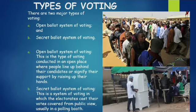Types of Voting. There are two major types of voting: open ballot system of voting and secret ballot system of voting. A. Open ballot system of voting — this is the type of voting where people line up behind their candidates or signify their support by raising up their hands.